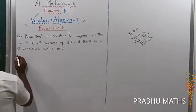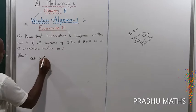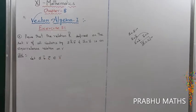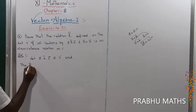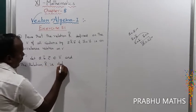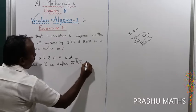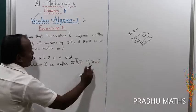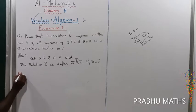Therefore, let A vector, B vector, C vector belong to V vector. The relation R is defined such that A vector is related to B vector if A equals B. The relation between A and B are equal. The first property to check is reflexivity — that is the equalness in relation.